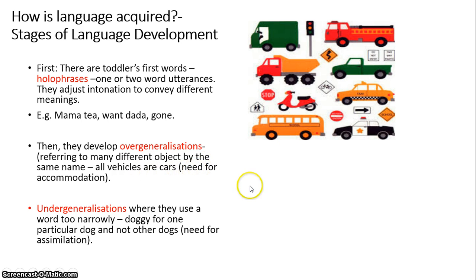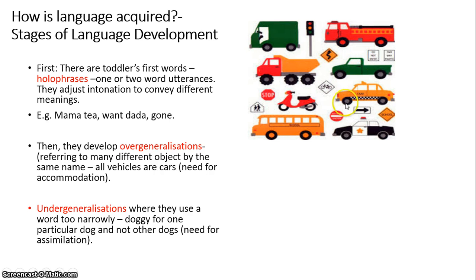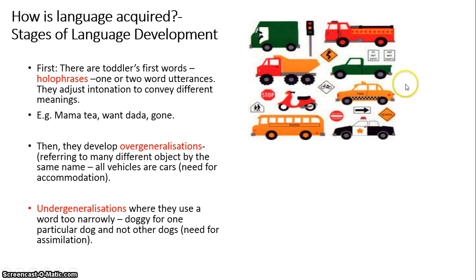This shows the need for accommodation — creating different categories for vehicles. The parent will correct and say, 'No, this is a bus, this is a truck, this is a fire engine or fire truck, this is a van.' So the child develops a wider vocabulary and we move away from overgeneralizations to identification of specific vehicles by their type.